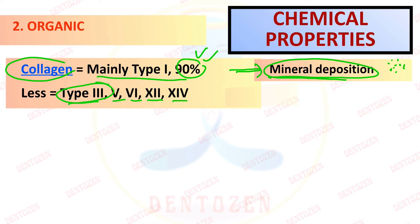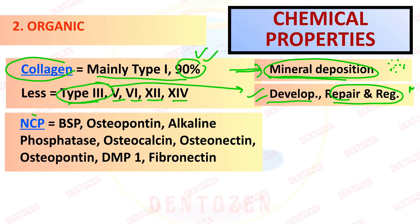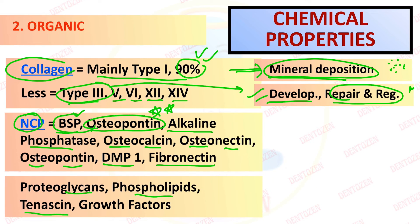Type 3 is mainly seen during development, repair, and regeneration and less in the mature cementum. So during these processes type 3 is seen. Now other proteins which are non-collagenous, which are not made from collagen, those non-collagenous proteins are quite similar to that of bone. Like bone sialoprotein and osteopontin. These two are the major ones. But other proteins similar to bone like alkaline phosphatase, osteocalcin, osteonectin, osteopontin, dentine matrix protein 1, fibronectin and proteoglycans, phospholipids, tenacin, and several growth factors are also seen in cementum.